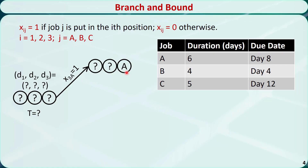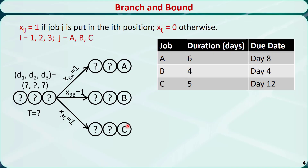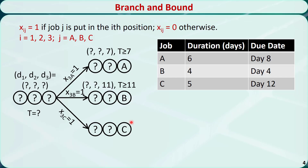Now, let's start with the last position, position 3. We can put job A, job B, or job C here — there are three options. For the option where job A is last, no matter what orders are for the first two positions, job A will always be completed on day 15 (which is 6 + 4 + 5). Job A is due on day 8, so the delay will be 15 - 8 = 7 days, meaning D3 = 7 days and the total delay must be ≥ 7 days. Similarly, for job B last, D3 = 11 days and total delay ≥ 11 days. For job C last, D3 = 3 days and total delay ≥ 3 days.